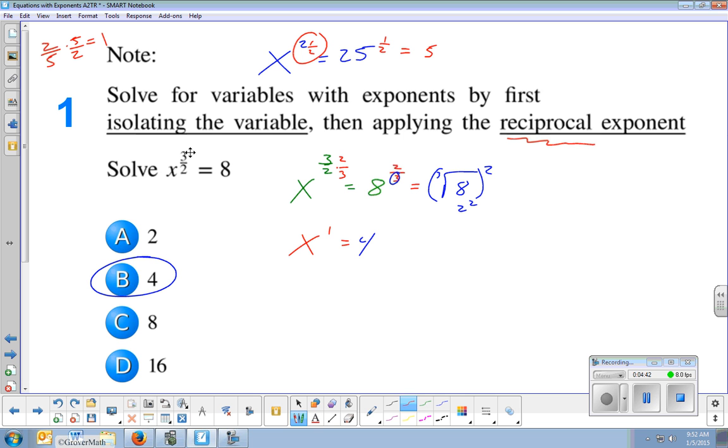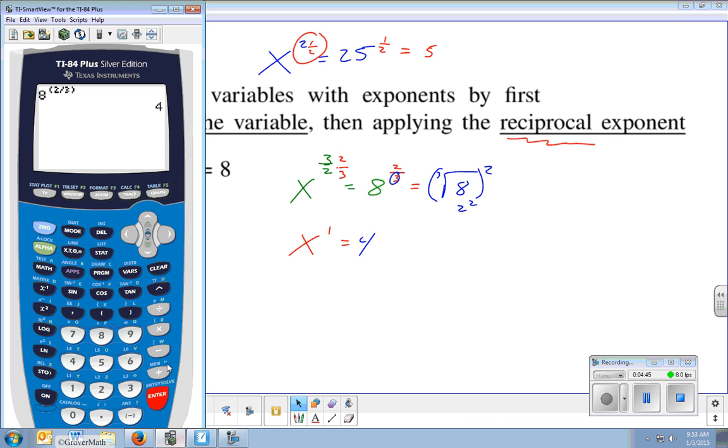Let me show you real quick. I mean, I know you've seen this before. But 8 raised to the parentheses 2 divided by 3 parentheses. The parentheses are helpful to tell the calculator that that whole thing is an exponent, not just the first thing you type. And so you've got x equals 4. And you can then check that in here.